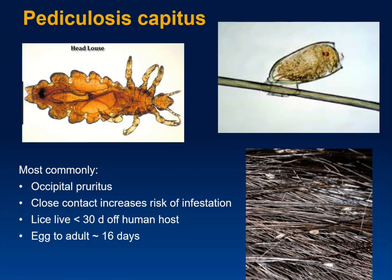Head lice causing scalp pruritus and occipital pruritus is not uncommon. It breaks out where there's close contact — daycare centers, schools, homeless shelters, and occasionally jails. The lice have hooks allowing them to attach to hair and can live on you for quite a while, but can also survive off a host for about 30 days. The time from egg to adult is roughly a little over two weeks.